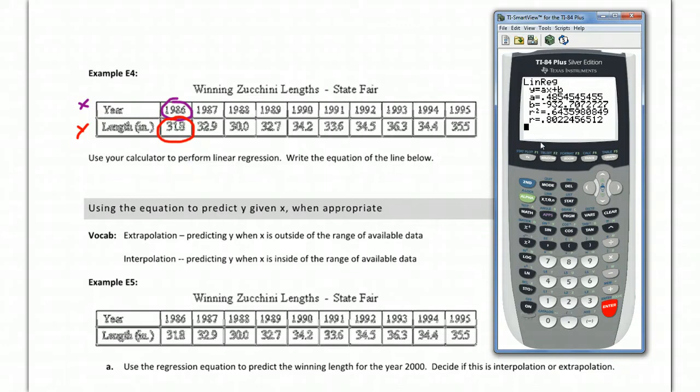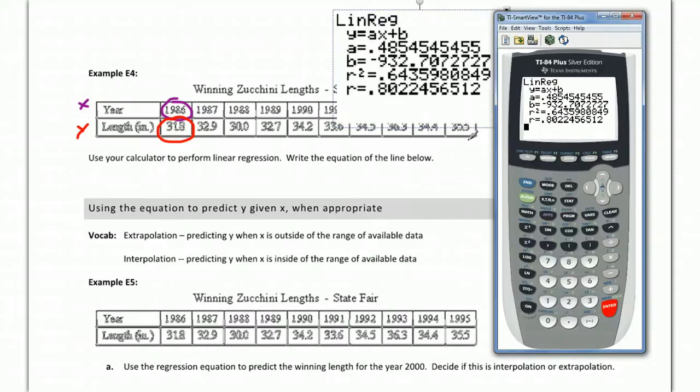If for some reason you don't have the r squared and the r, only if that's the case, I want you to do something. I'm going to first put these numbers to the side, but I'm going to show you. If you don't have those numbers coming up, go ahead and go to second zero, second catalog, and hit the D key here for the D.